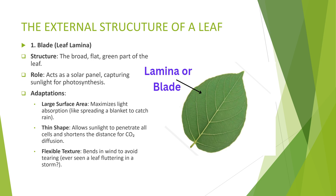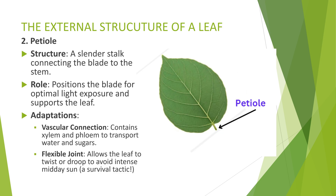2. The petiole: the petiole is the stalk that connects the blade to the stem. It positions the blade for optimal light exposure and contains vascular tissues to transport water and nutrients. It is also flexible to allow the leaf to twist or droop to avoid intense sunlight — a survival tactic.